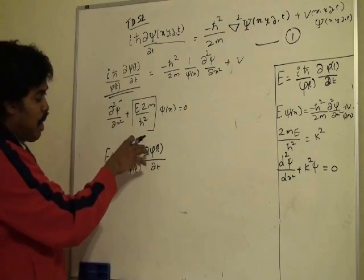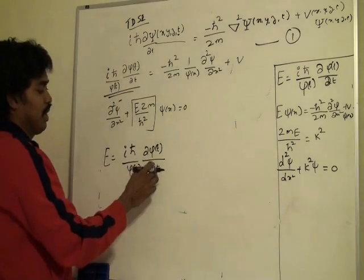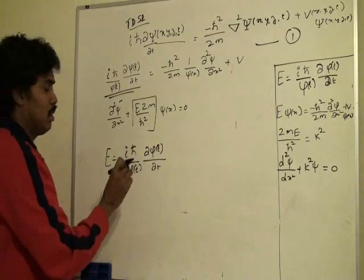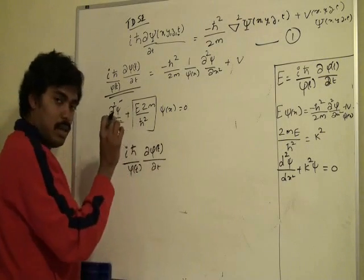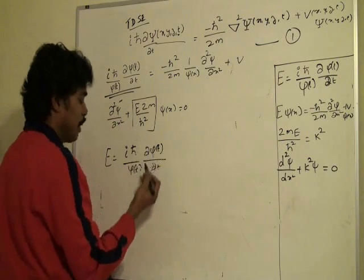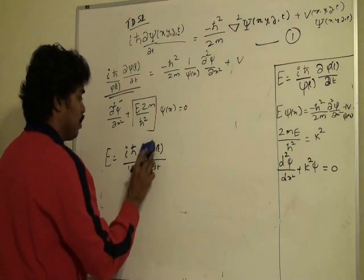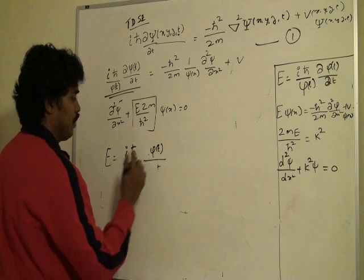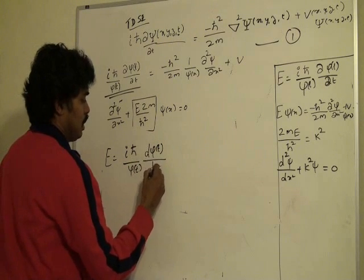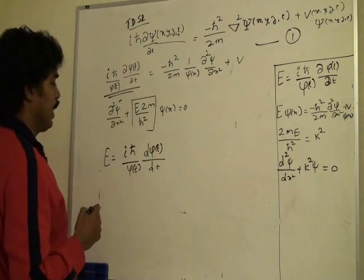even though we say it is a partial derivative, we are talking about only one parameter, and this function is of that same parameter, so it does not make sense to call this a partial derivative. This is same as the regular derivative d of φ(t) by dt.